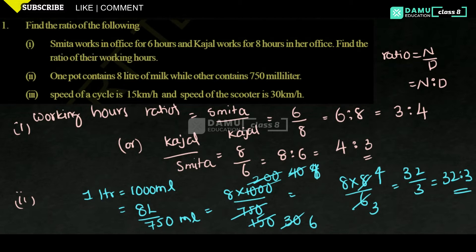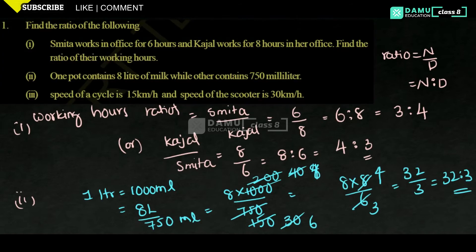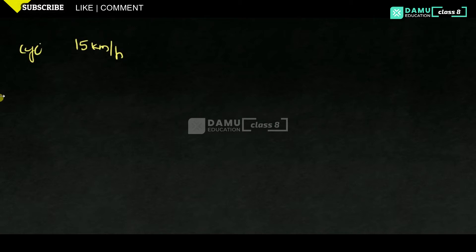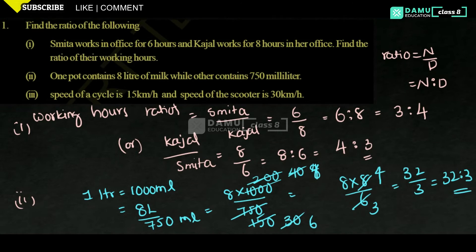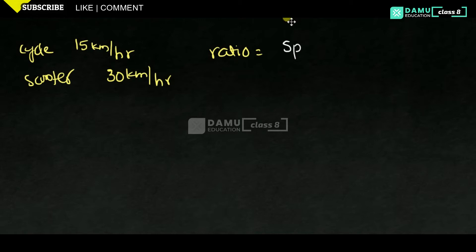Our next one is: the speed of a cycle is 15 kilometres per hour, and the speed of the scooter is 30 kilometres per hour. The ratio of cycle to scooter will be the speed of cycle by speed of scooter.